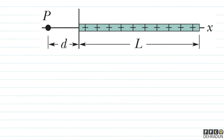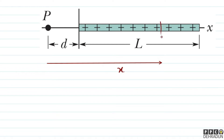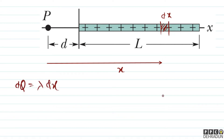We need to break the rod into very small elements. We start from point P and go to a distance X, then move a further DX ahead — so we get a very small element of length DX. Since charge per unit length is lambda, the charge DQ on this element of length DX will be lambda × DX.